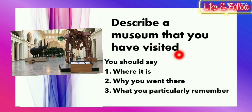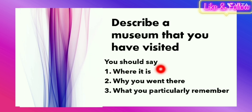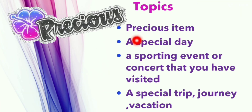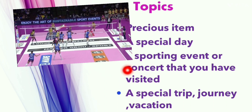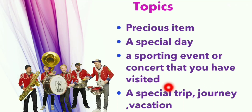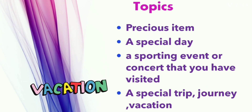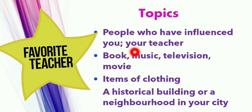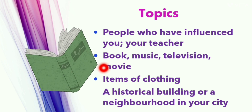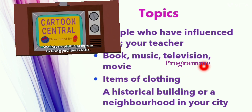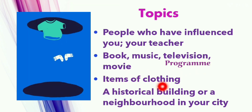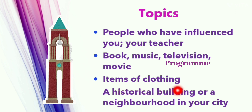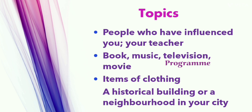Let's look at one more cue card: 'Describe a museum that you have recently visited.' The areas to cover are: where it is, why you went there, and what you particularly remember. More topic examples include: a precious item, a special day, a sporting event or concert, a special trip or vacation, people who have influenced you such as a favorite teacher, your favorite book, music, movie, or TV program, an item of clothing, or a historical building or neighborhood in your city.